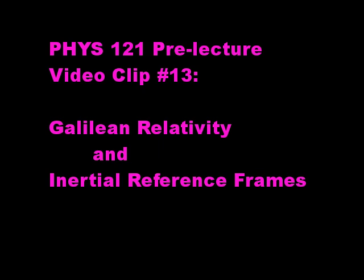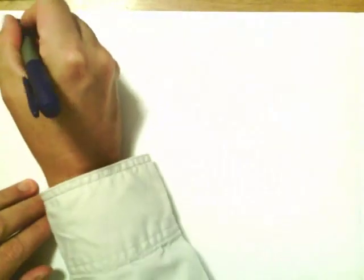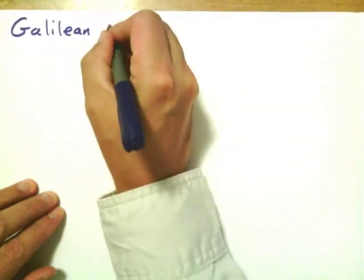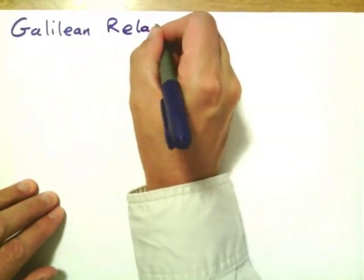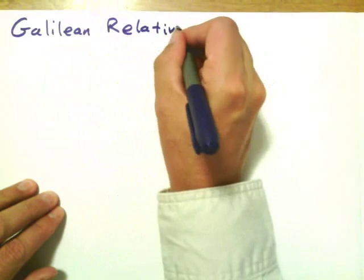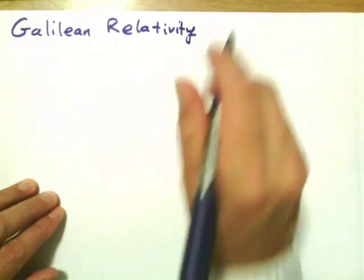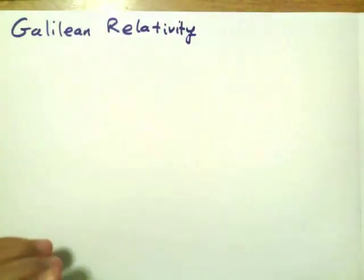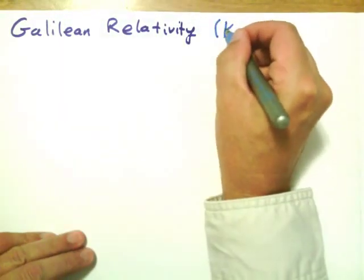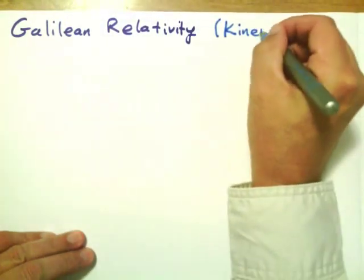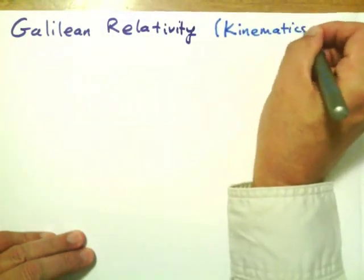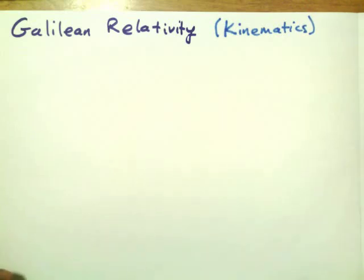Hello and welcome to the pre-lecture video clip 13 on Galilean relativity and inertial reference frames. Relativity is a concept that was put forth by Galileo. We're going to be interested particularly in regard to the kinematics of different inertial reference frames — that is, reference frames moving with constant velocity.